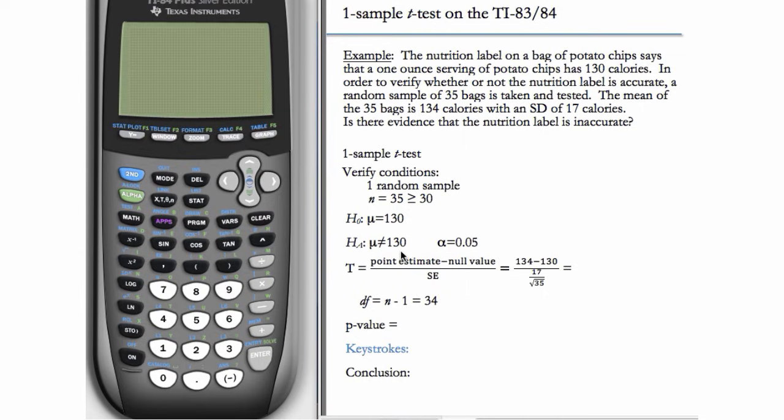Notice that we chose a two-sided alternate hypothesis. The sample average turned out to be greater than 130, but we didn't know whether it would be greater or less than before we looked at the data. So we should always make our alternate hypothesis before we see the data. The label could have been inaccurate being too high or too low. So we choose the two-sided test here.